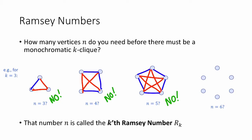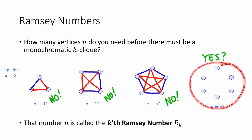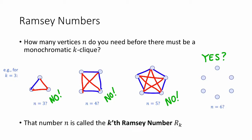So perhaps you failed to find one. In fact, that's not an accident. There is no way to color the complete graph on six vertices so as to avoid a monochromatic triangle. This leads us to the definition of Ramsey numbers. We see that the smallest number n so that there must be a monochromatic k-clique is the kth Ramsey number. In this example, it turns out that r3 is equal to six — six is the smallest number so that any two-coloring of the complete graph on six vertices must have a monochromatic triangle.